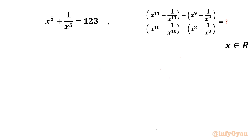Welcome back to Infigyan, my dear friends. Today in this video we are going to take up another challenging question from algebraic simplification. One equation is known to us: x⁵ + 1/x⁵ = 123. Then we have to simplify a given expression.